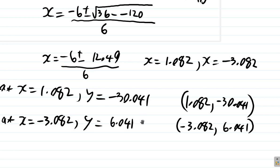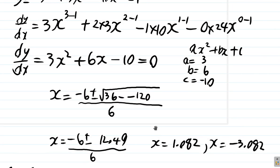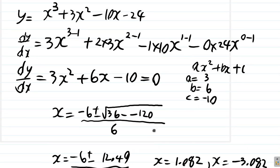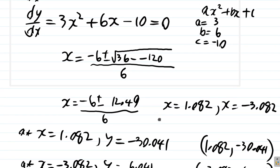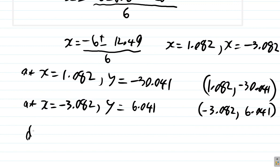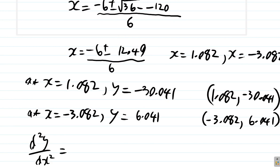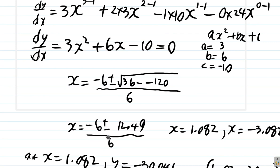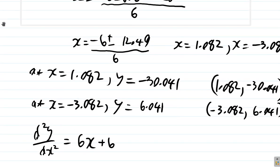Now, as for the nature, we can use the second derivative to find the nature of those critical points. We have dy/dx = 3x² + 6x − 10, so let us find d²y/dx². Differentiating: 3x² becomes 6x, 6x becomes 6, and the constant −10 gives 0. So d²y/dx² = 6x + 6.